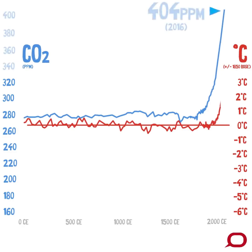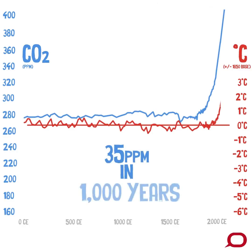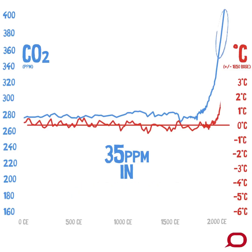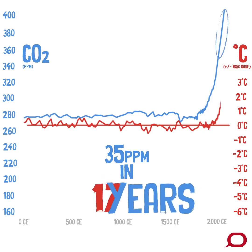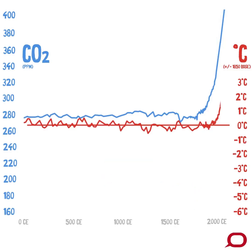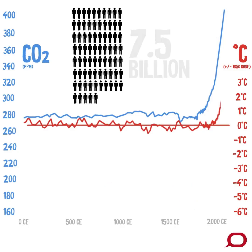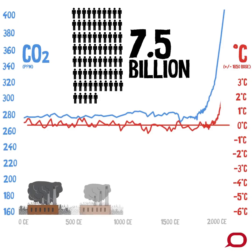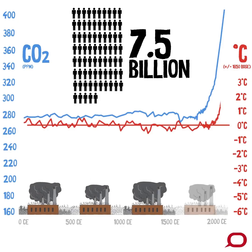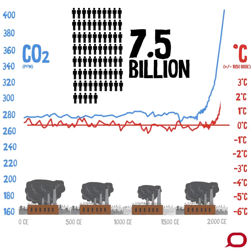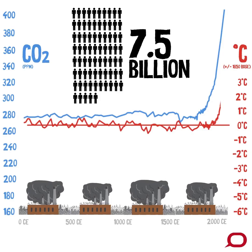Here's where we are now. When the earth warmed out of the last ice age, CO2 levels naturally increased by 35 parts per million over 1,000 years. Humans have caused CO2 to rise by this amount in just the last 17 years. And our population is at 7.5 billion people, with many cities around the world rapidly developing, increasing their CO2 output year on year.